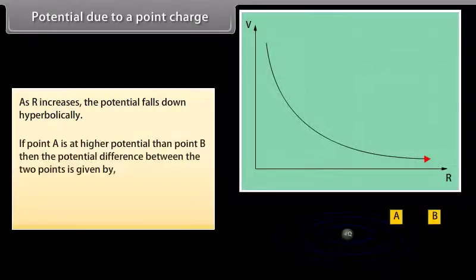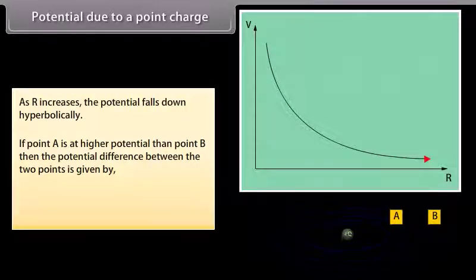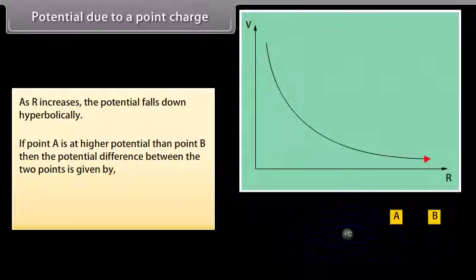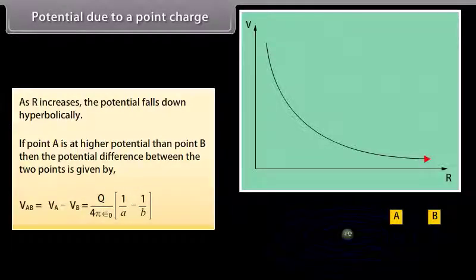If point A is at higher potential than point B, then the potential difference between the two points is given by V_AB = V_A − V_B. Substituting the values of V_A and V_B, we get V_AB = (Q / 4πε₀) × (1/A − 1/B).